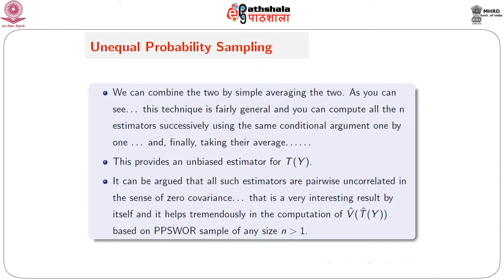We can combine the two by simple averaging. This technique is fairly general. You can work out E1, E2, and after E2, if you get to the third unit, take out yt plus ys from ty and estimate the total for the truncated population eliminating t and s, then bring back t and s. That is how we can have a very general expression. You can compute all n estimators E1, E2, ..., En successively using the same conditional argument one by one. Finally, you can take their average. Using all the sample units, E1 is based on the first, E2 on the first two, E3 on the first three, and so on, up to En using all n. They are all unbiased estimators of ty by the conditional argument, and therefore you can take their average.